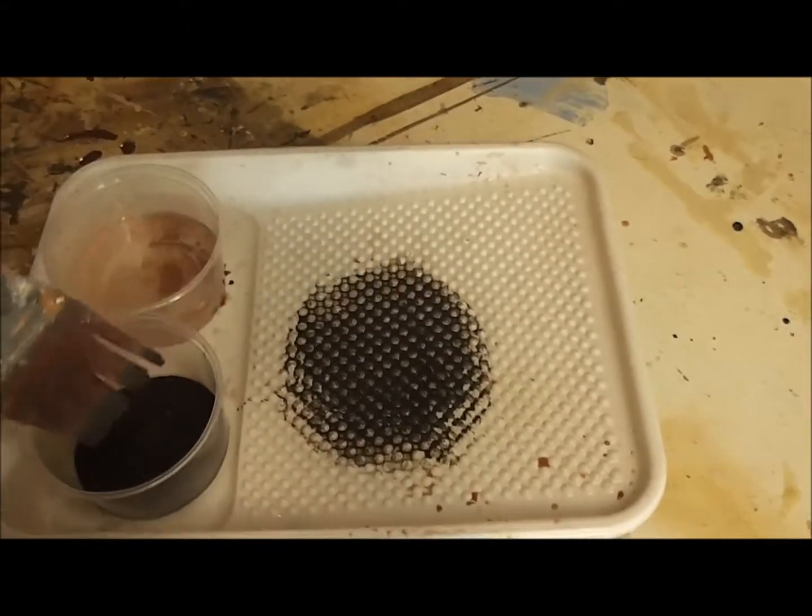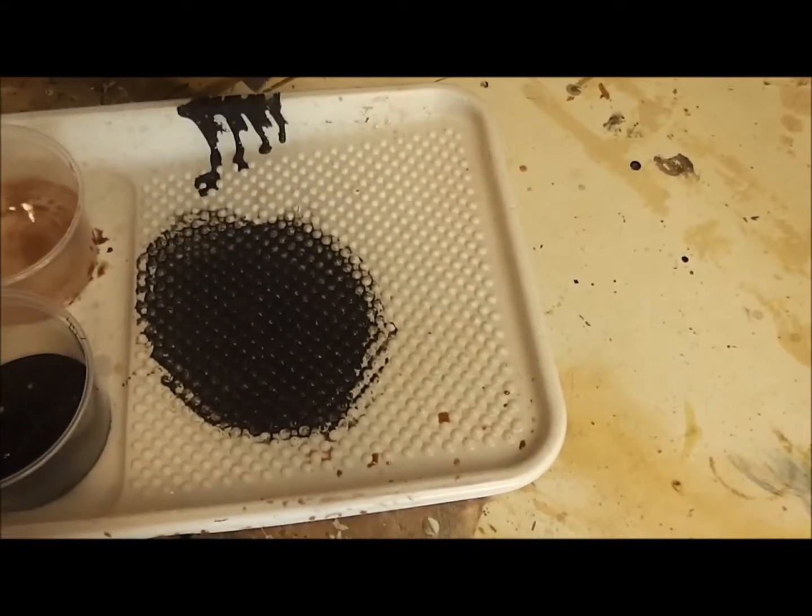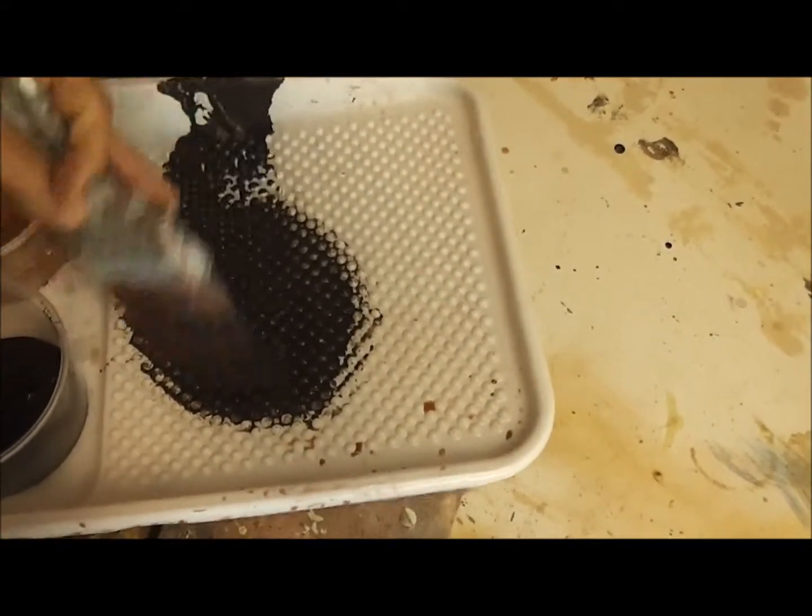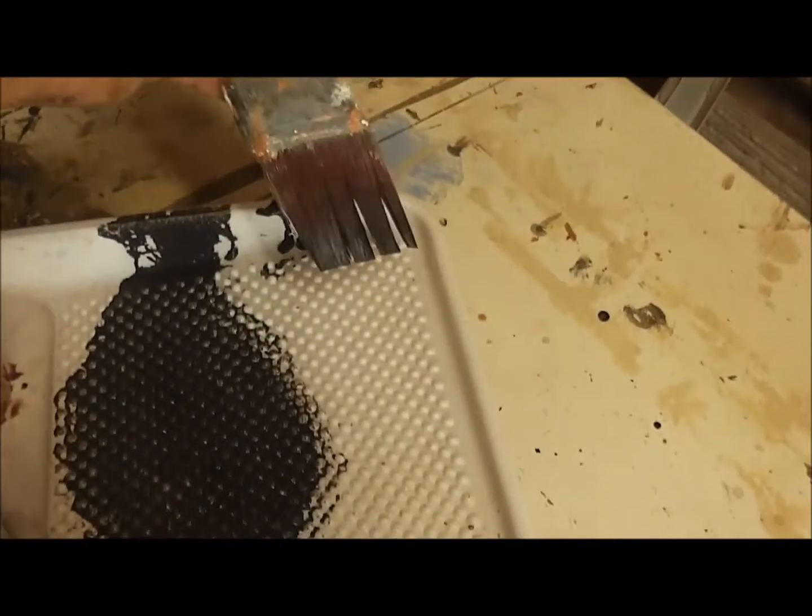I'm just basically using the exact same technique, just want it a little bit thinner and you don't want to put hardly any on the door at all. This darker coat will make that panel darken up really fast so you got to be careful with it.